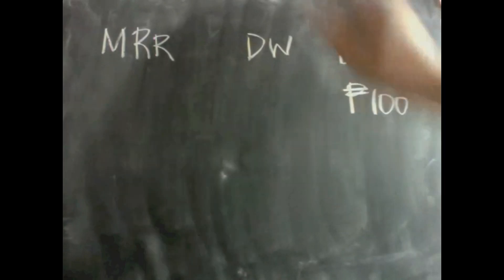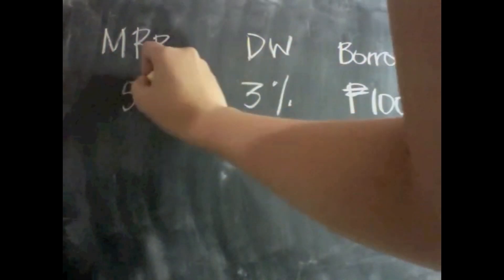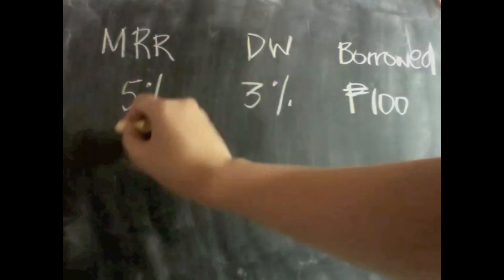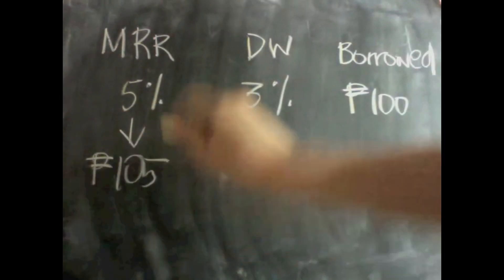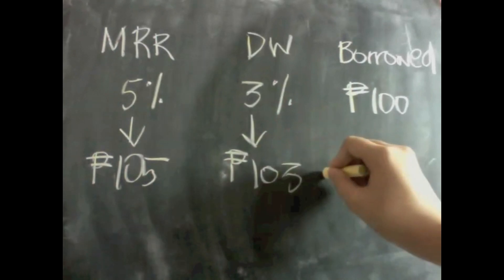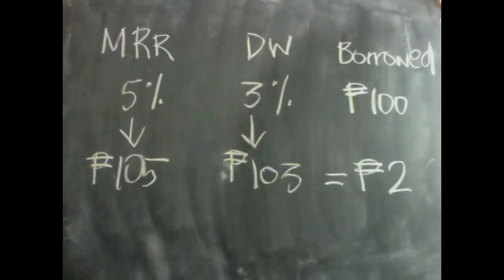The counterpart of the Discount Window is the Market Rate of Return. For example, a bank wishes to borrow 100 pesos. The BSP has a discount window rate of 3%, while the market rate of return is 5%. Instead of borrowing from a fellow bank at 5%, paying 105 pesos, borrowing from the BSP at 3% means it will only pay 103 pesos — a saving of 2 pesos.